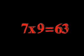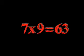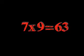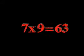Seven times eight is fifty-six. Seven times nine is sixty-three.